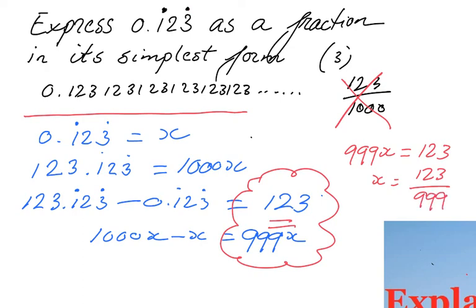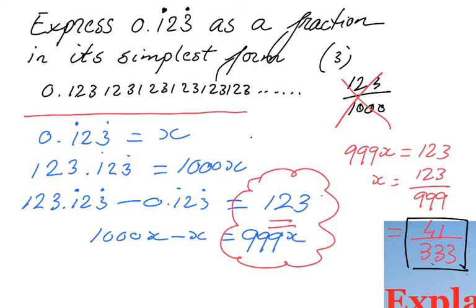Now go back to the question — it says in its simplest form, so always simplify if you can. I see a factor of 3: 999 divided by 3 is 333, and 123 divided by 3 is 41. So your final answer is 41 over 333.